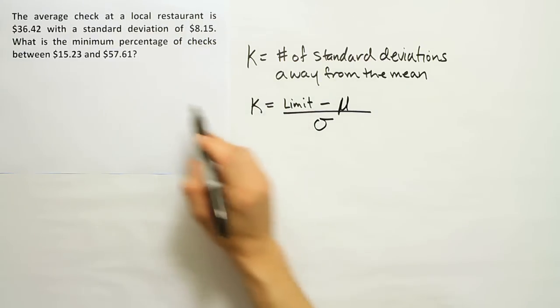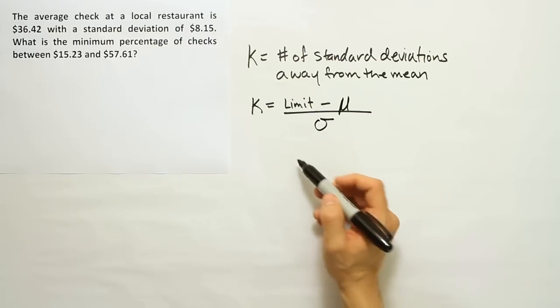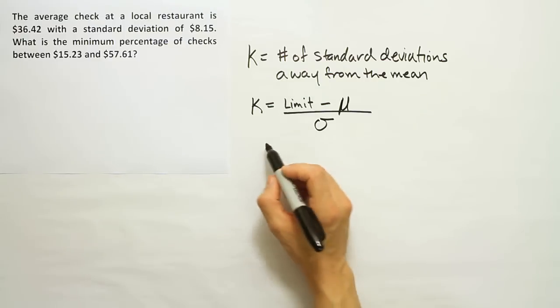When I say limit, I mean one of these numbers here from the interval. You can use either the upper limit or lower limit. But if you use the upper limit, then you would use this 57.61 and you subtract off the mean.